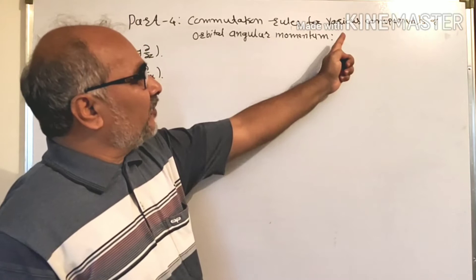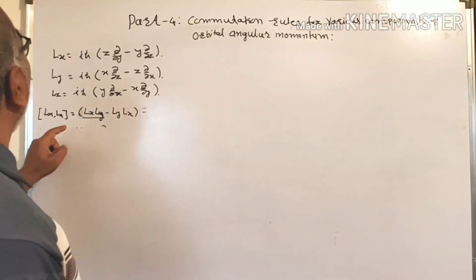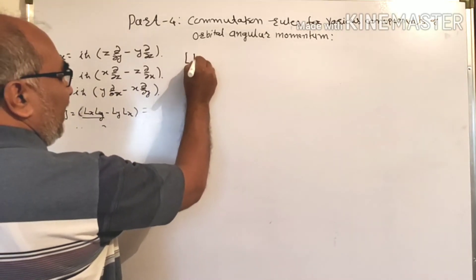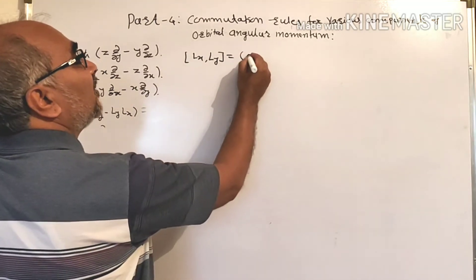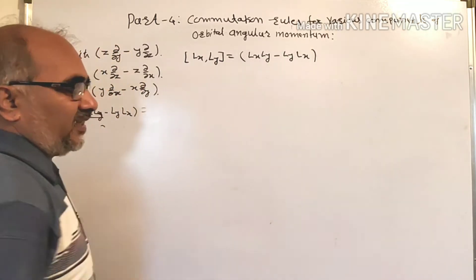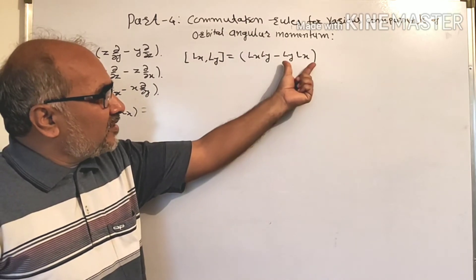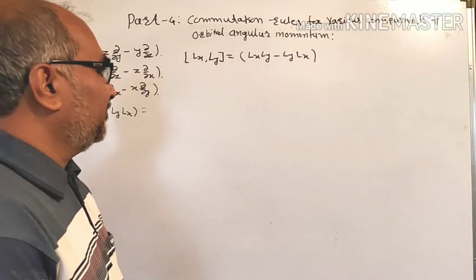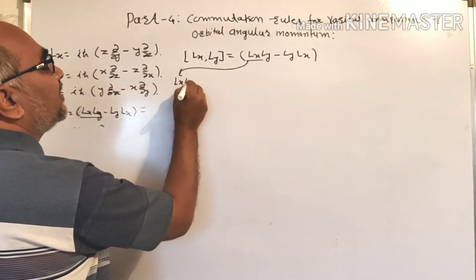We are going to see what the commutation rules are for the various components of orbital angular momentum. Therefore, the commutator [Lx, Ly] is equal to LxLy minus LyLx. First we find out the first component LxLy, and after that LyLx, and the subtraction between these two will give us the final result.